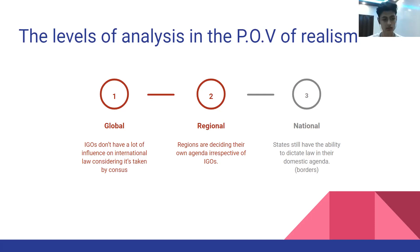At the regional level, regions are still deciding their agendas irrespective of IGOs. For example, oil-rich countries like Saudi Arabia and Qatar are still deciding their agenda in the Arab Gulf region and the peninsula, irrespective of an IGO like the UN. At the national level, states still have the ability to dictate law on their domestic agenda — that is, inside their borders. For example, China still implements the death penalty inside its borders, even though the UN is completely against it.